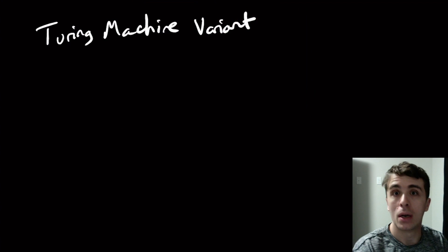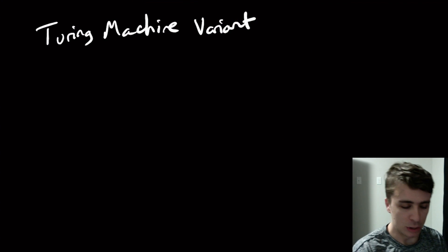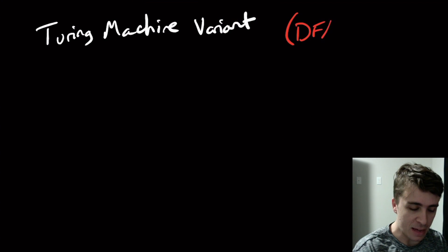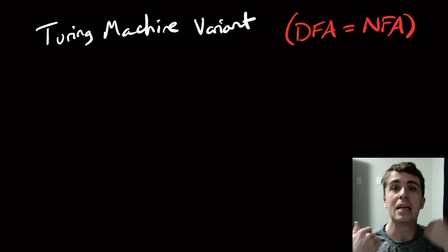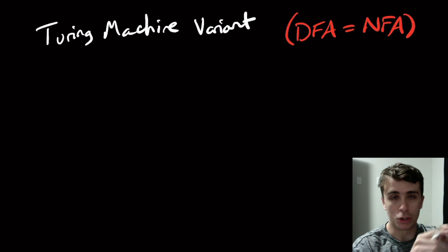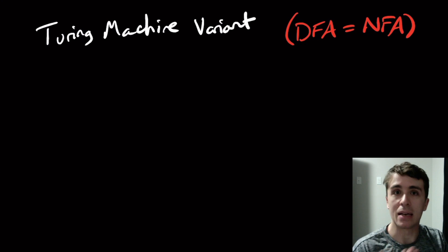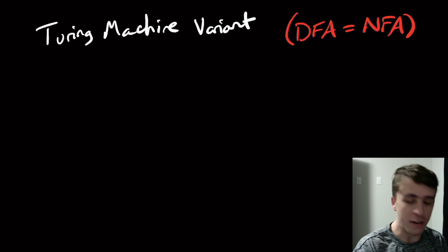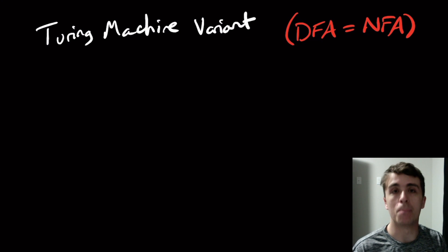So analogously for regular languages, we had DFA equal NFA because NFA is a variant of the deterministic finite automaton because it has multiple transitions of the same symbol and non-determinism and all that stuff. So Turing machine variants are similar but we're looking at different types of changes to the machine model.